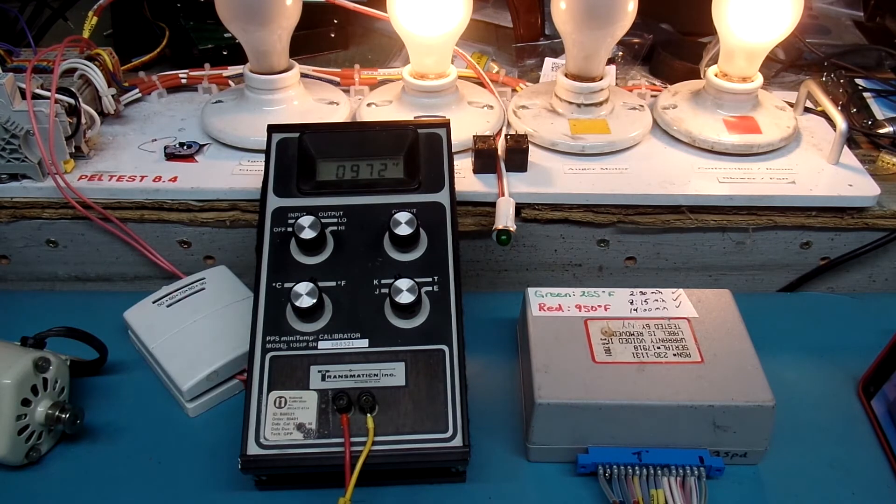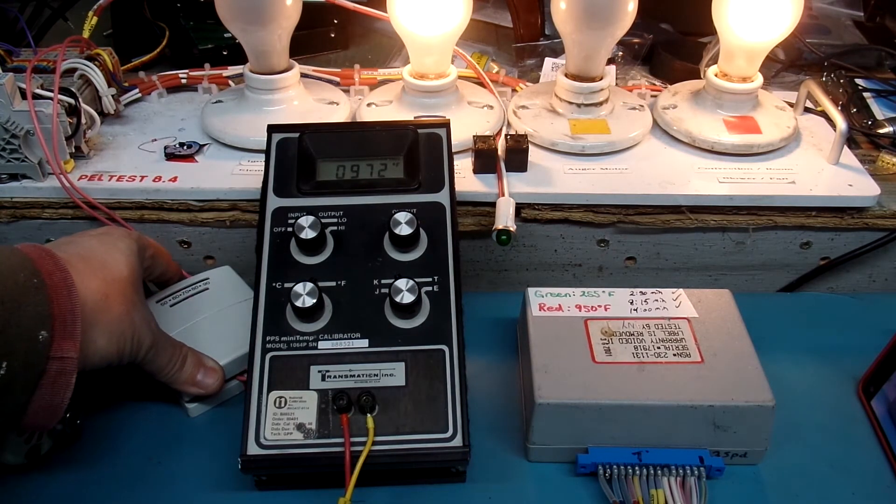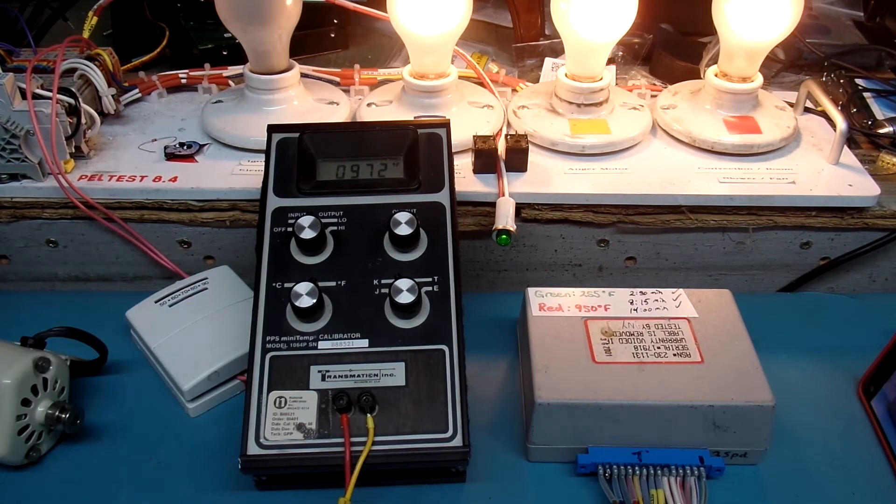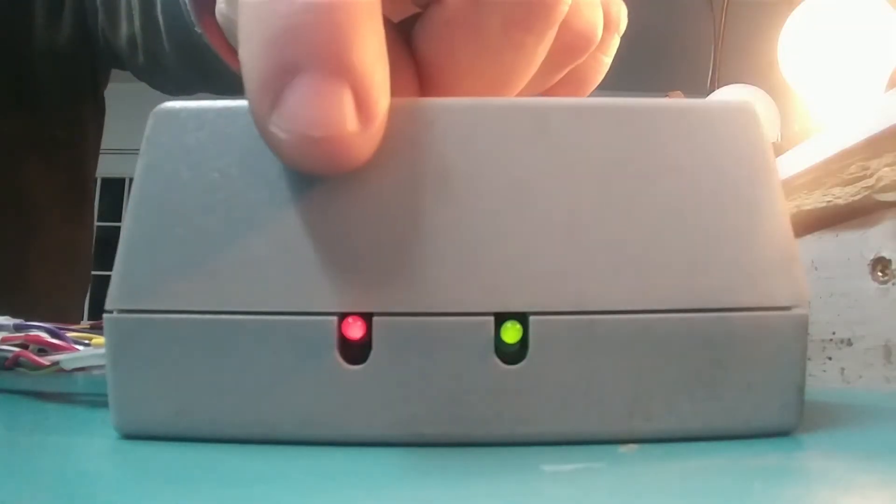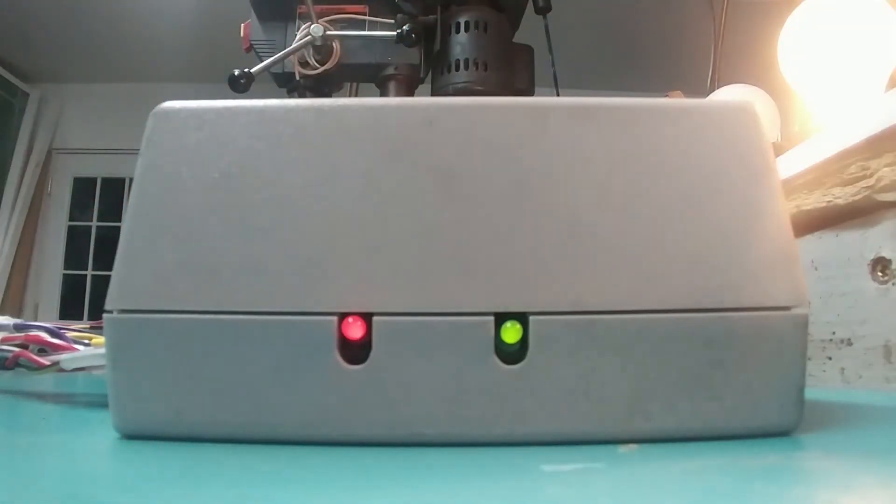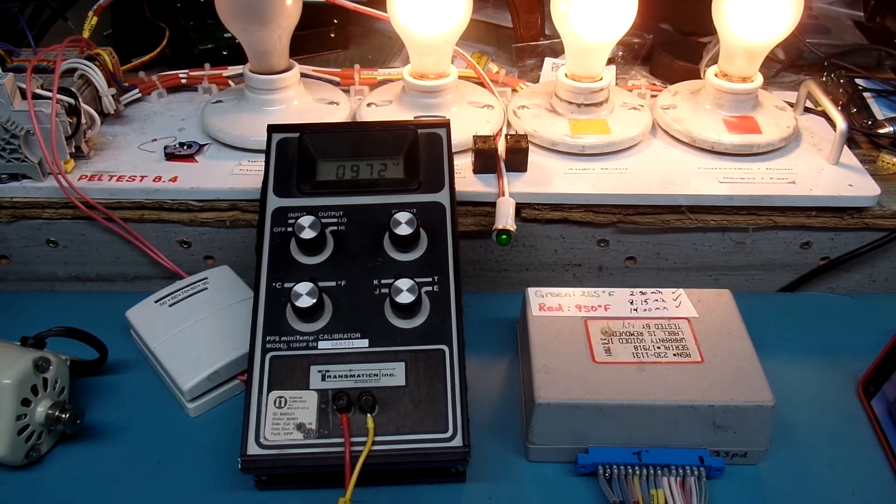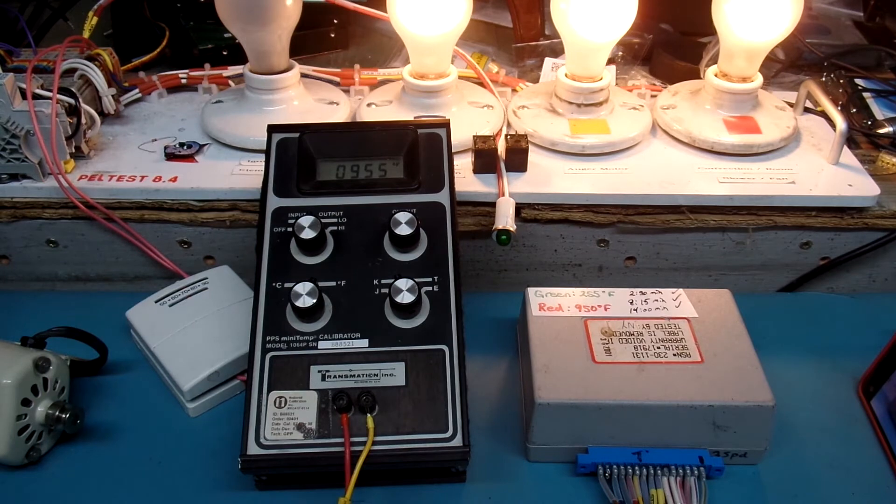The room will cool a little bit. Once the room cools, the thermostat closes again, causing the auger motor to start feeding pellets. That cycle will continue as long as we're calling for heat, and as long as we remain in the red light zone, above 950 degrees Fahrenheit. If we were to fall below 950 degrees Fahrenheit, where the red light goes off, the igniter will come back into play. So let's turn that down.